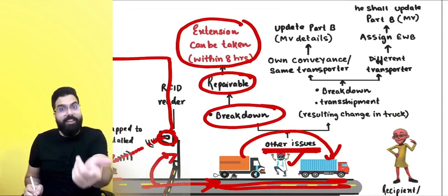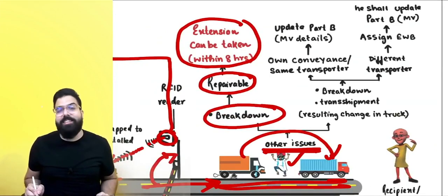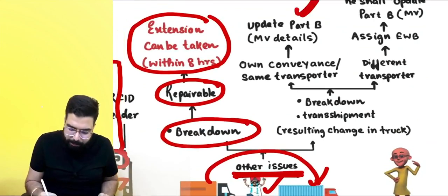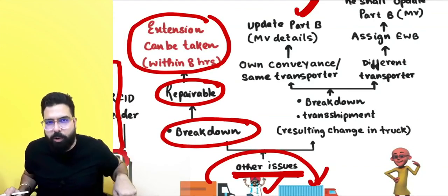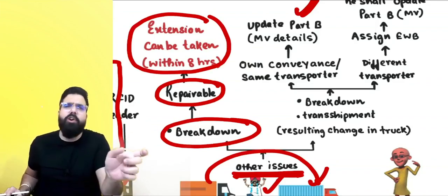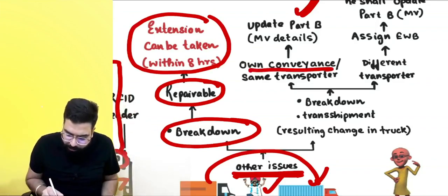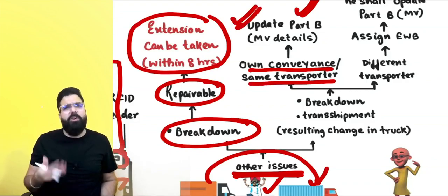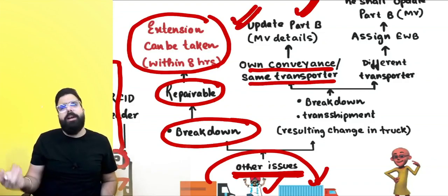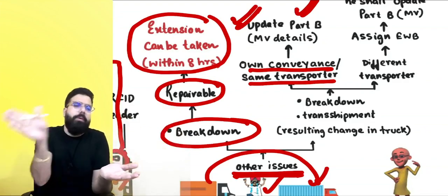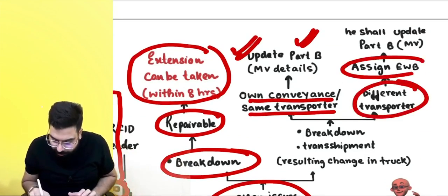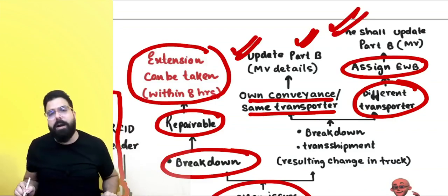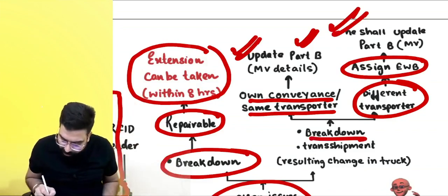If only the vehicle needs to change, update Part B of GST EWB-01 — the motor vehicle details. If it is your own conveyance or the same transporter's vehicle, just update Part B. If the transporter changes, the current transporter will assign the e-way bill to another transporter, who will then update Part B, take the goods, and go. So for any breakdown or transshipment, Part B must be updated.